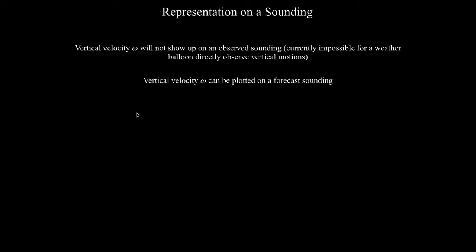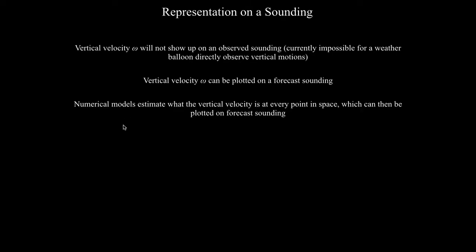When you take a look at a forecast sounding, you're looking at what a numerical model is estimating to be the state of the atmosphere at a specific point in time and space. Part of that estimate involves calculating what the expected vertical velocity will be at every point in space and at a specific point in time.